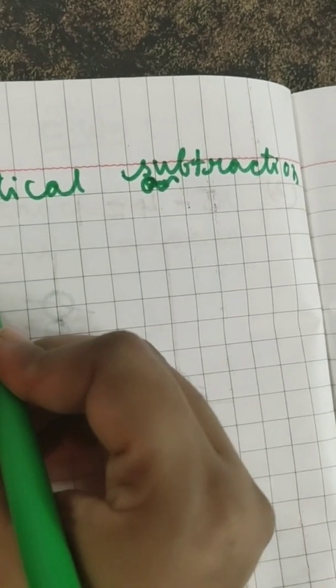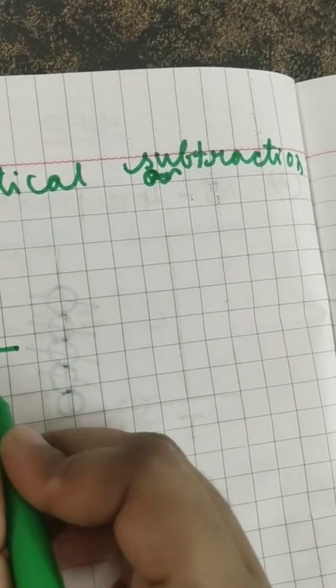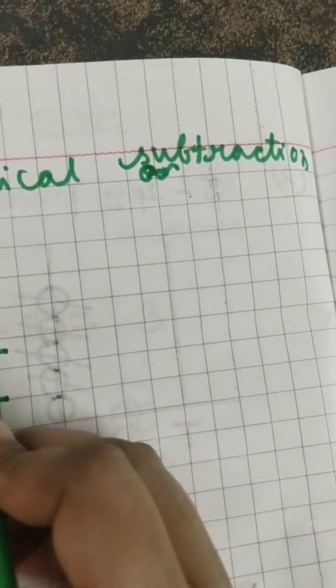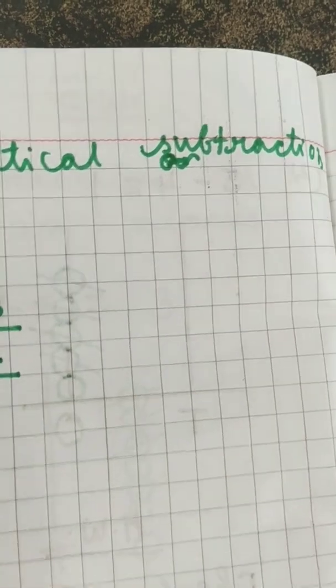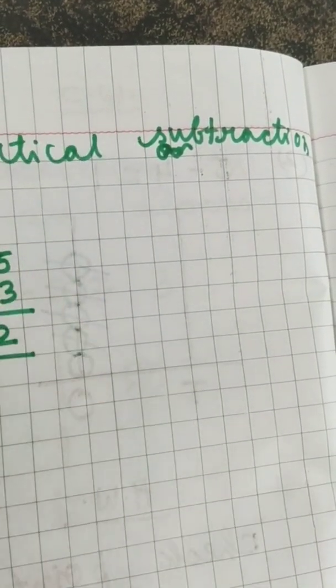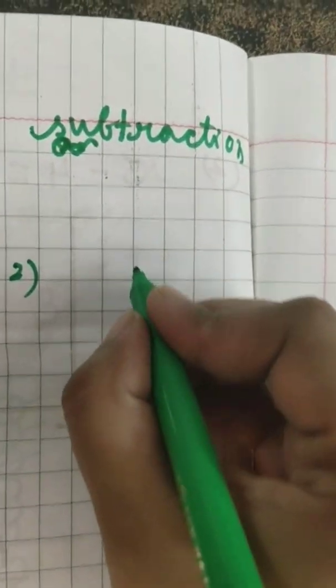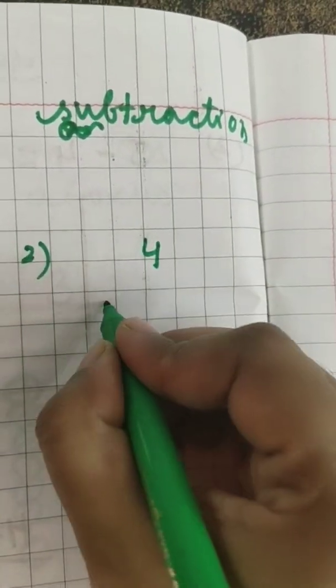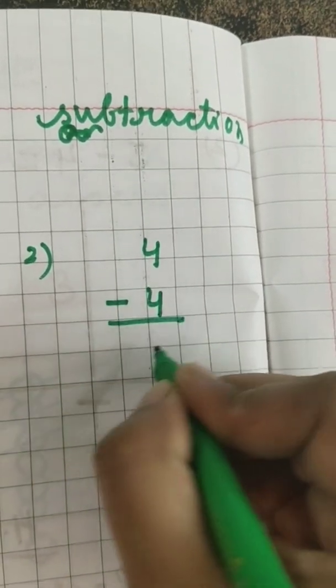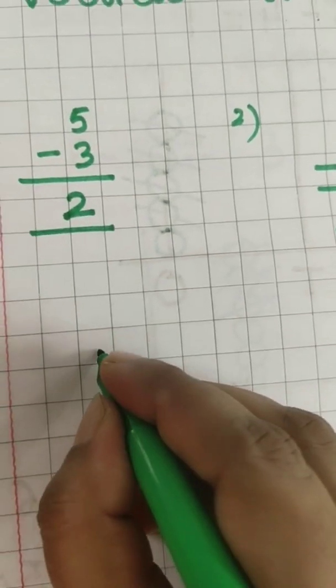The number one question is 5 minus 3, and we will write the answer here. 5 fingers, 3 gone. How many left? Yes, 2. Then one more question ma'am is going to give. This time ma'am will give you so many questions and you all have to do it yourself. Because this time you can, I know you can do it.